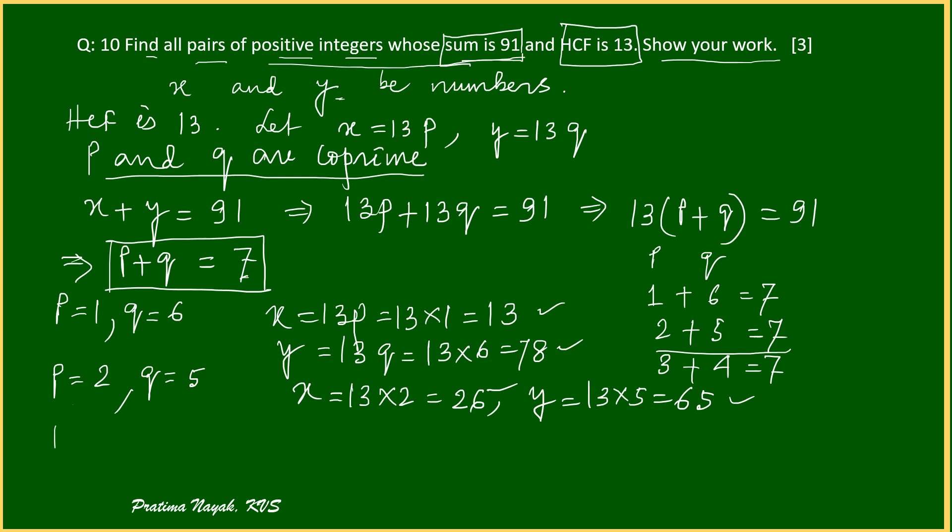Coming to third one. P is equal to 3, Q is equal to 4. So X is equal to 13 multiplies 3, that will be 39. And Y is equal to 13 into 4, that will be 52.